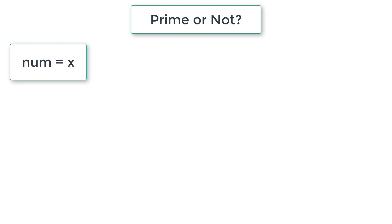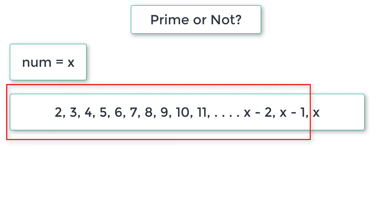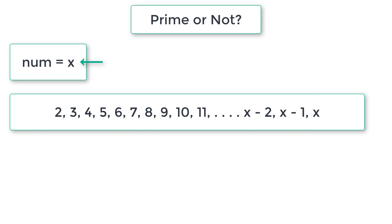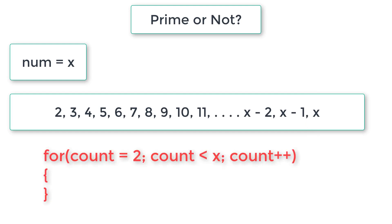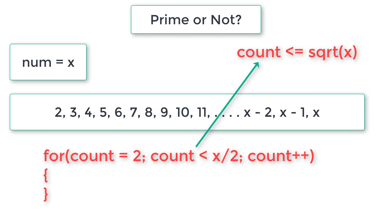So let's write a for loop for a general number x. We need to start dividing x from 2 to x minus 1, because any number will be perfectly divisible by 1 and itself. We leave those and check from 2 to x minus 1. We can reduce the number of iterations by writing the condition as count is less than or equal to x divided by 2.